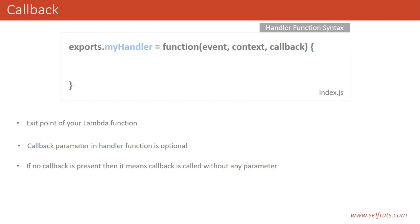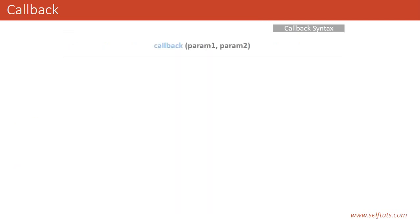We will see the signature of this callback function — the parameters that it needs. Basically, the callback function accepts two parameters: parameter one and parameter two. Depending on whether we are providing an error or a successful response, we need to set these parameters accordingly.